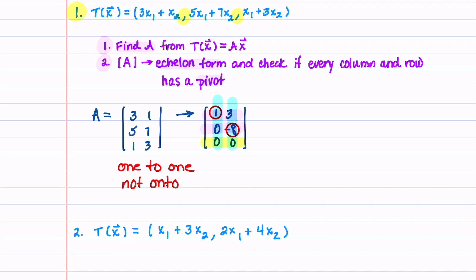This row of zeros leads to a restriction on our vector b, and because of that, there won't be a solution for all vectors b, so our transformation is not onto.